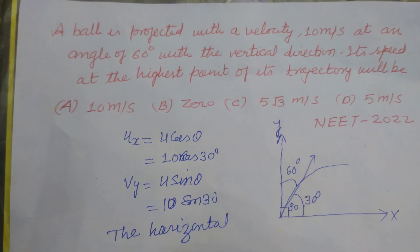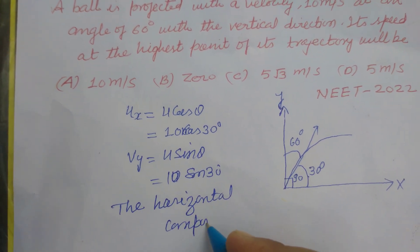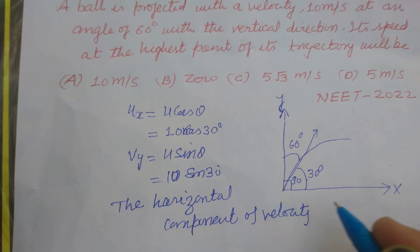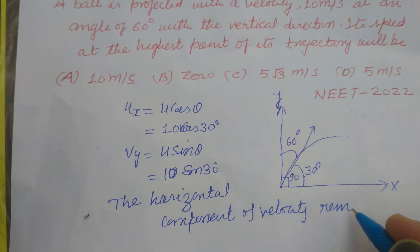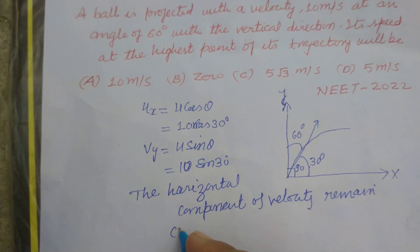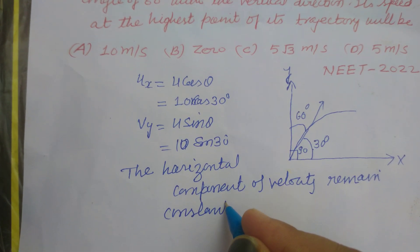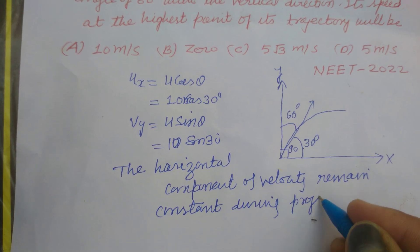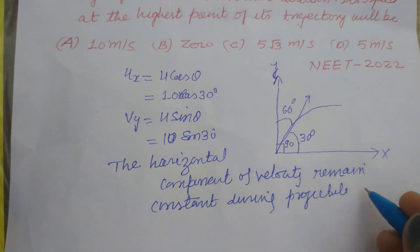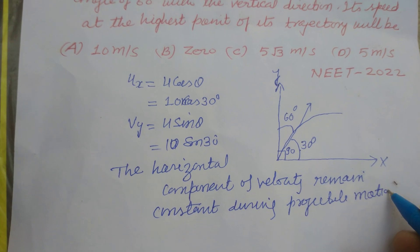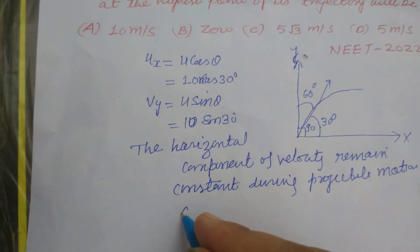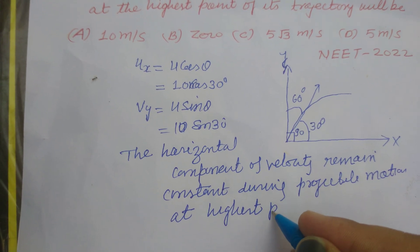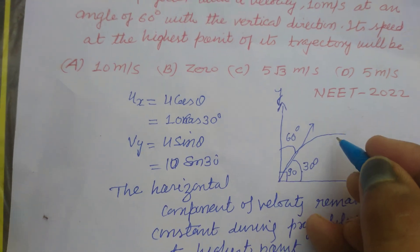The horizontal component of velocity remains constant during projectile motion. At the highest point, the vertical component vy is equal to zero.